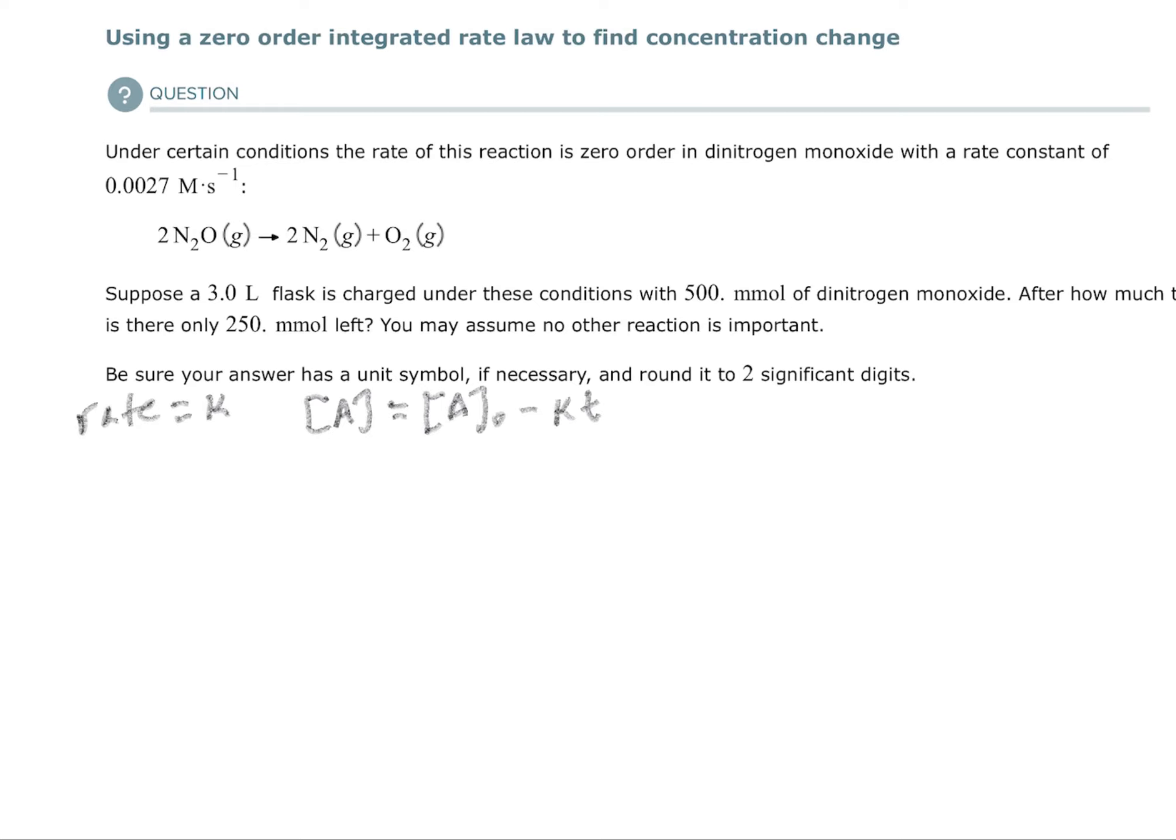Now in this case we're looking at dinitrogen monoxide, so I could easily just recopy this as [N₂O] equals the concentration of N₂O originally minus KT. And then you are asked to find the time—after how much time is there only 250 millimoles left?